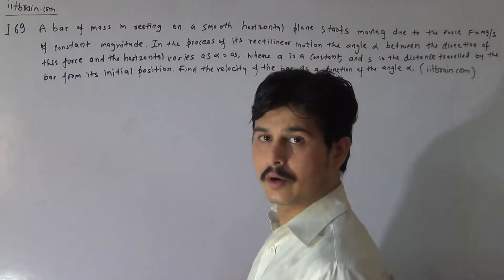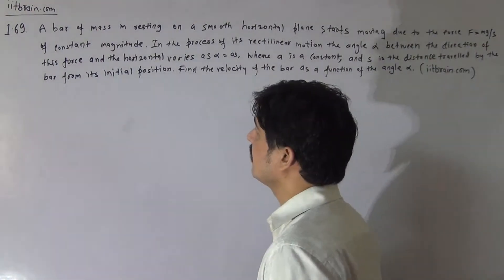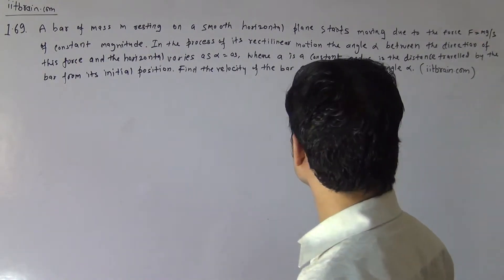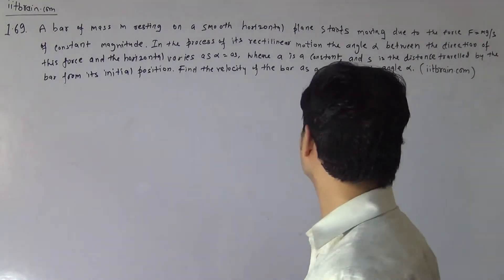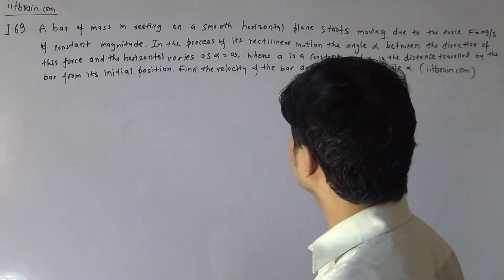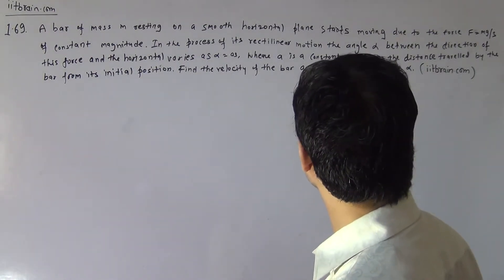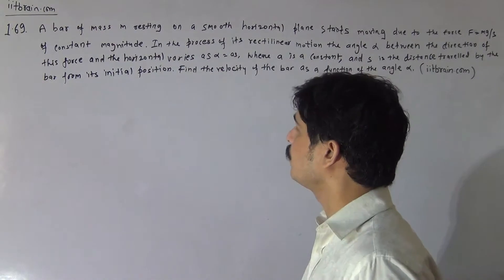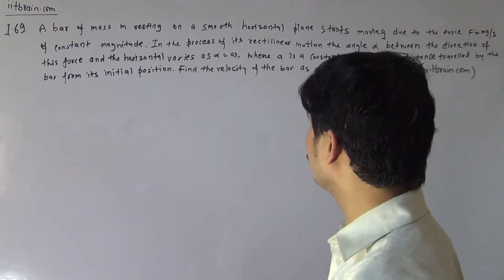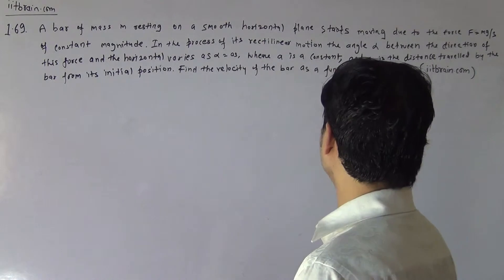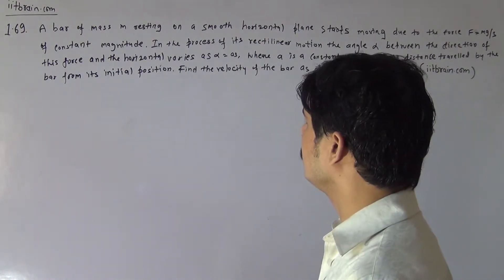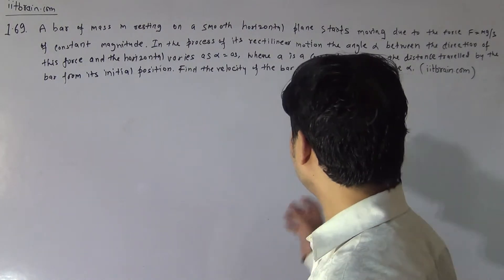Hello students, this is problem 1.69. A bar of mass M resting on a smooth horizontal plane starts moving due to a force F equal to Mg by 3 of constant magnitude. In the process of its rectilinear motion, the angle alpha between the direction of force and horizontal varies as alpha equal to a into s, where a is a constant and s is the distance traveled by the bar from its initial position.